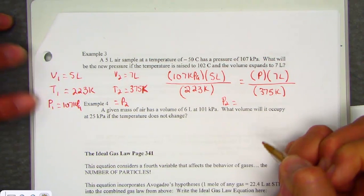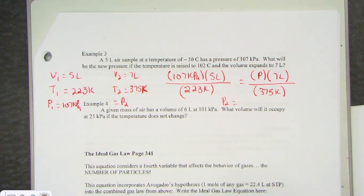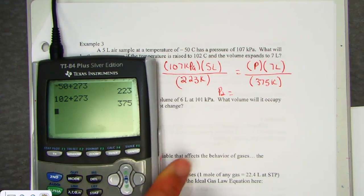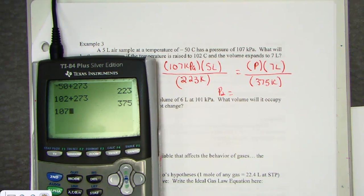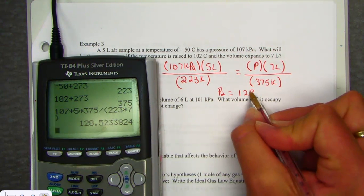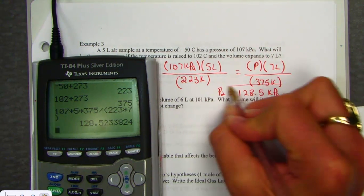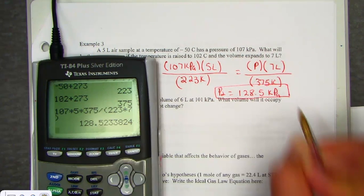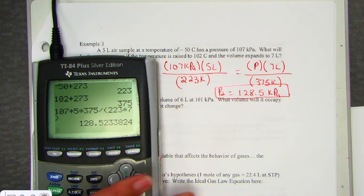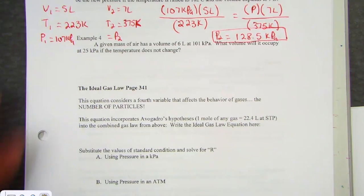We're going to pull out for P2 the new pressure. Same strategy. We cross-multiply the side without the variable. So our key sequence would show us hitting 107 times 5 times 375. And I'll divide by the product of 223 and 7 in a parenthesis. Our new pressure, 128.5. We put a kPa in, so that's the matching unit for pressure 2. And we'll do one more together in our lesson, example 4.